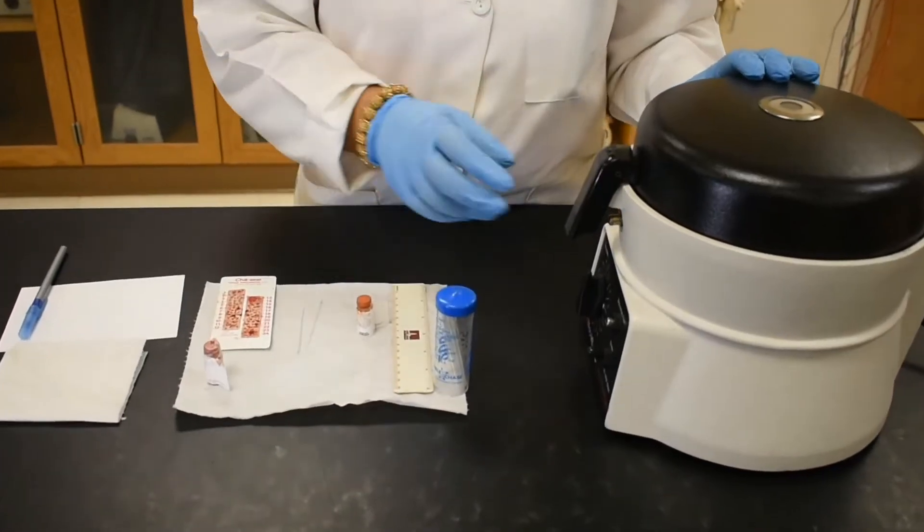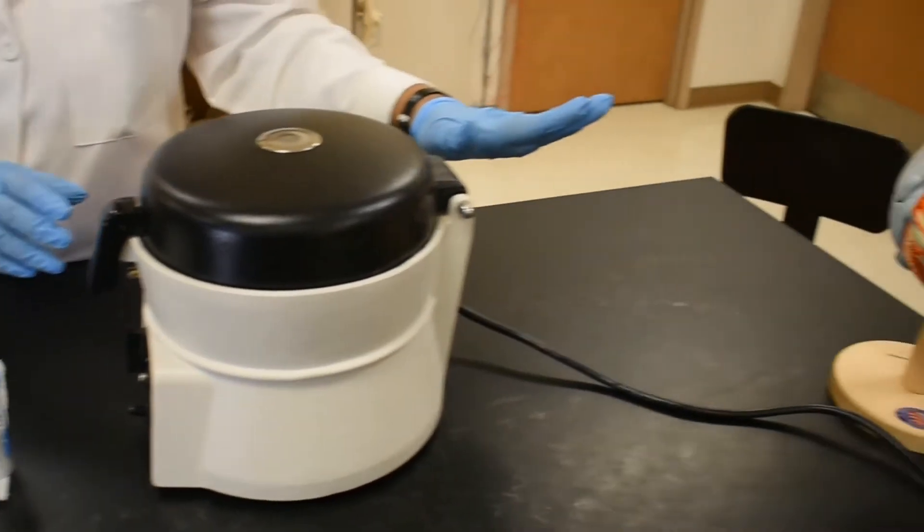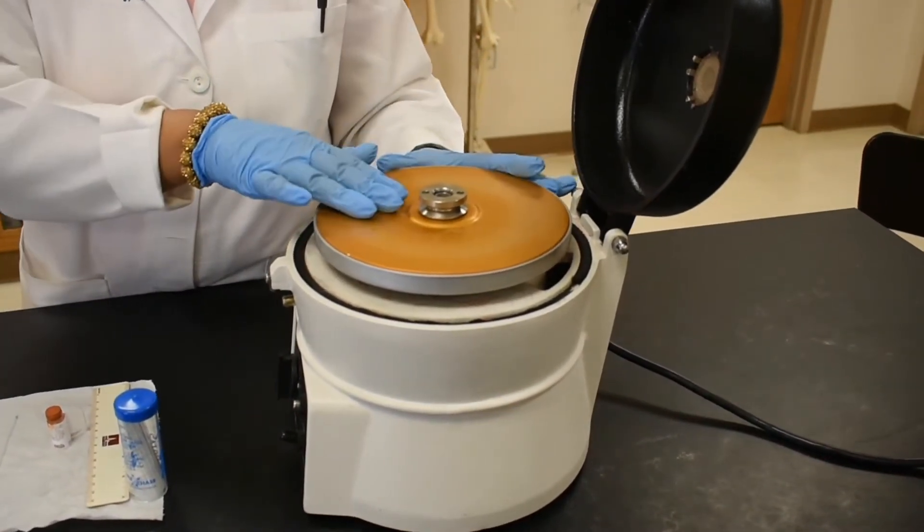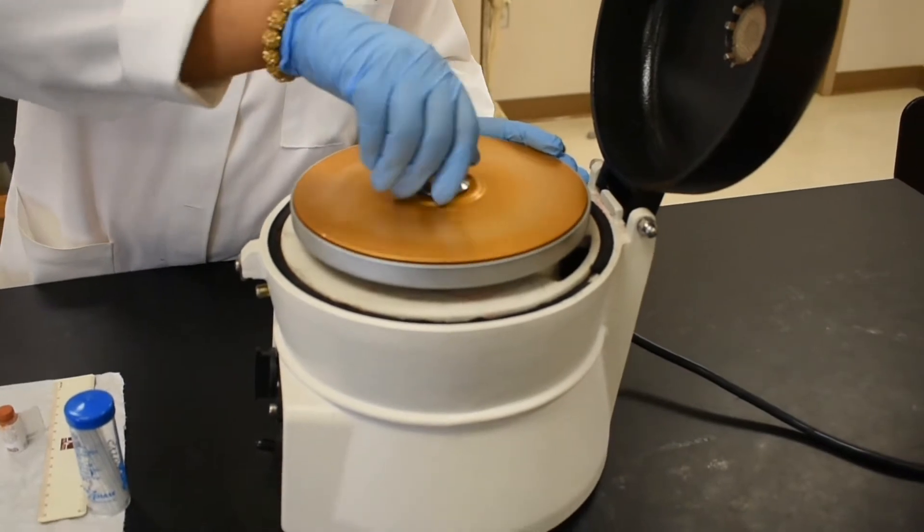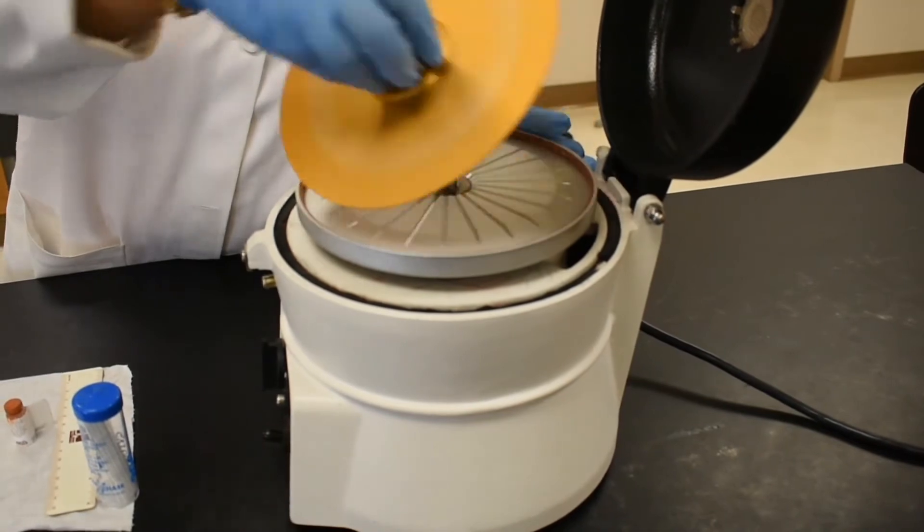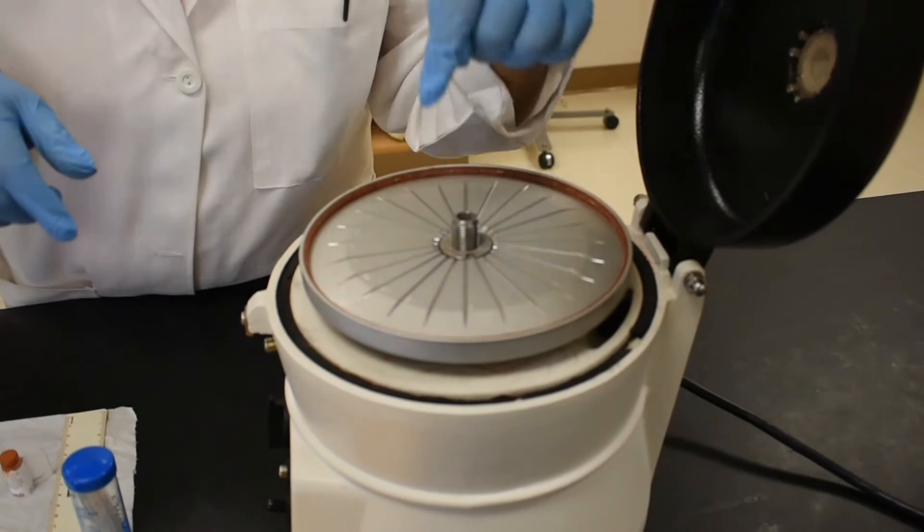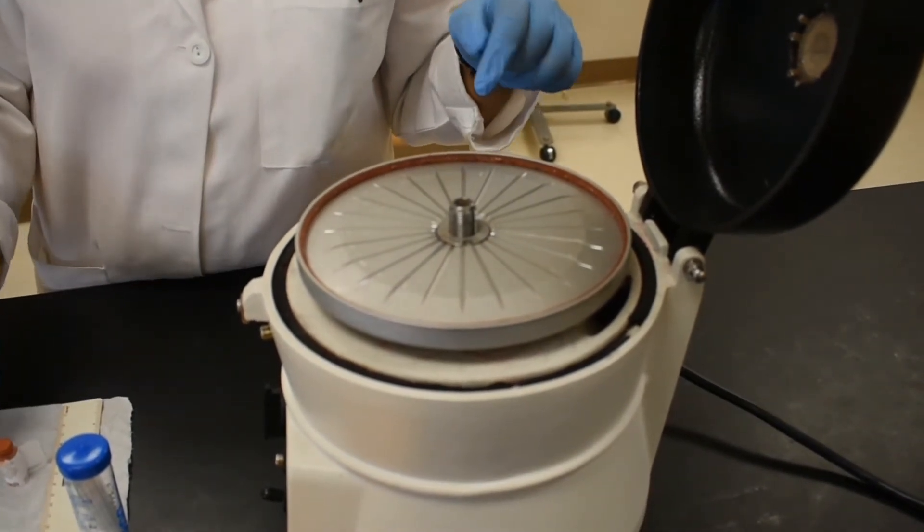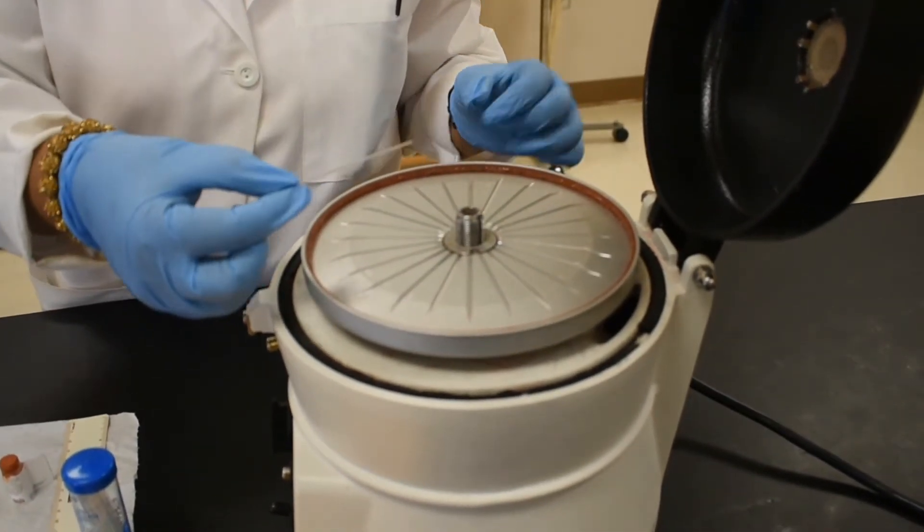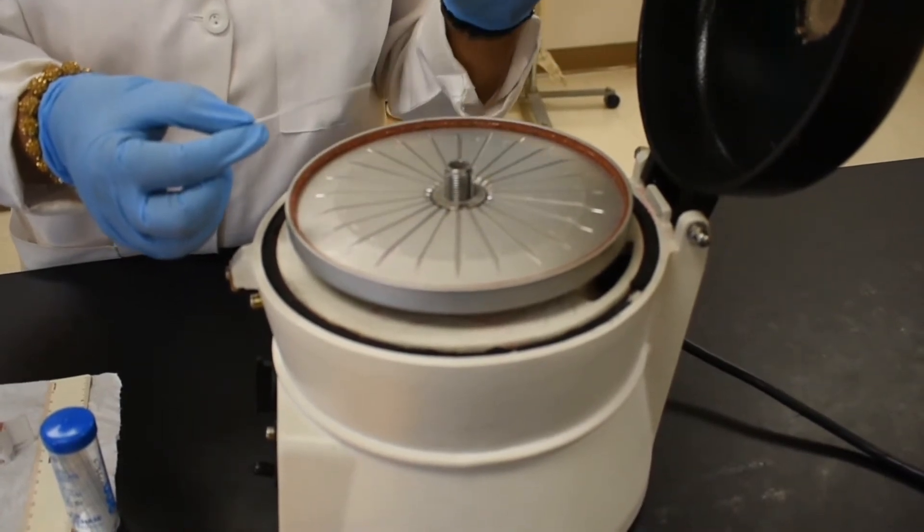Before we draw the blood, make sure everything is ready with the micro centrifuge. Plug it in. Then when you open the lid, there is another screw cap. Unscrew it. And now you can see the slots inside the machine. Within these slots we put the capillary tubes. That's why this instrument is called a micro centrifuge machine.